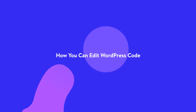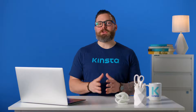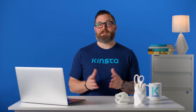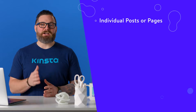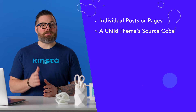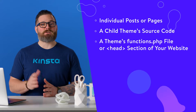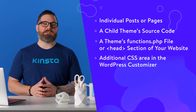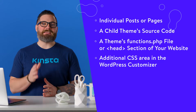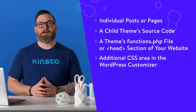To get more control on how your WordPress site looks and functions, you can edit your WordPress code to customize different areas like individual posts or pages, a child-themed source code, a theme's functions file or head section of the website, or you can add custom CSS in the additional CSS area in the WordPress customizer.